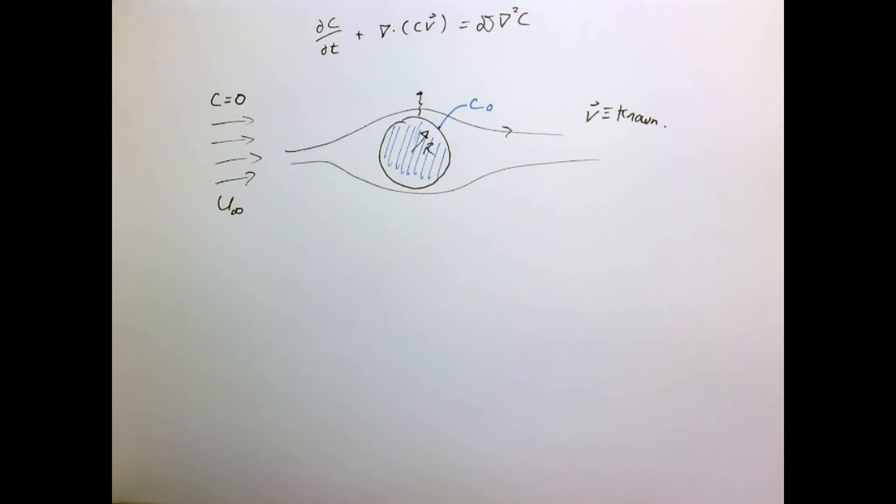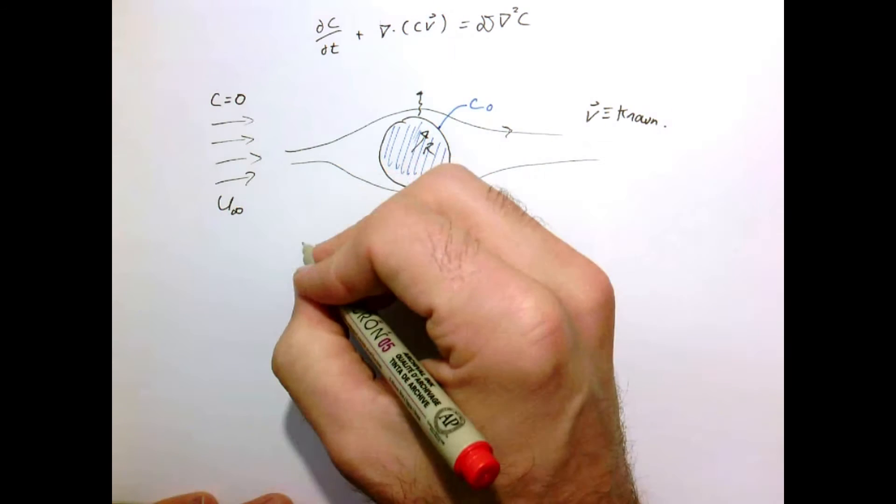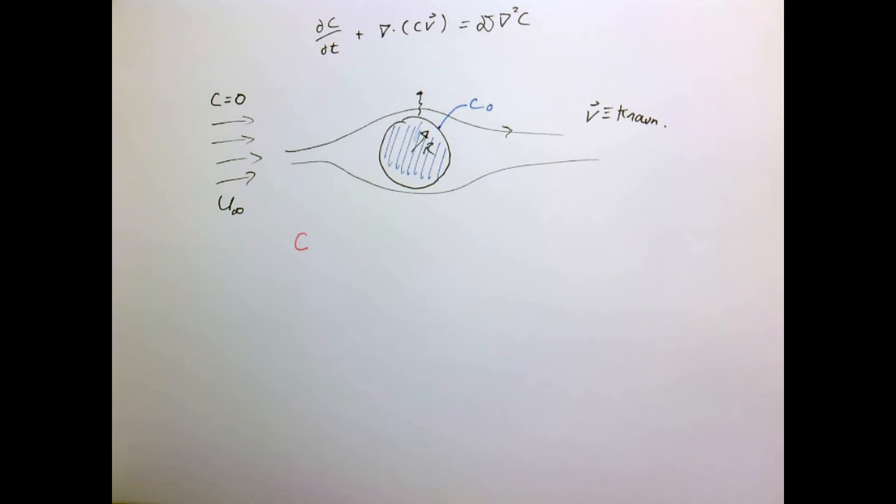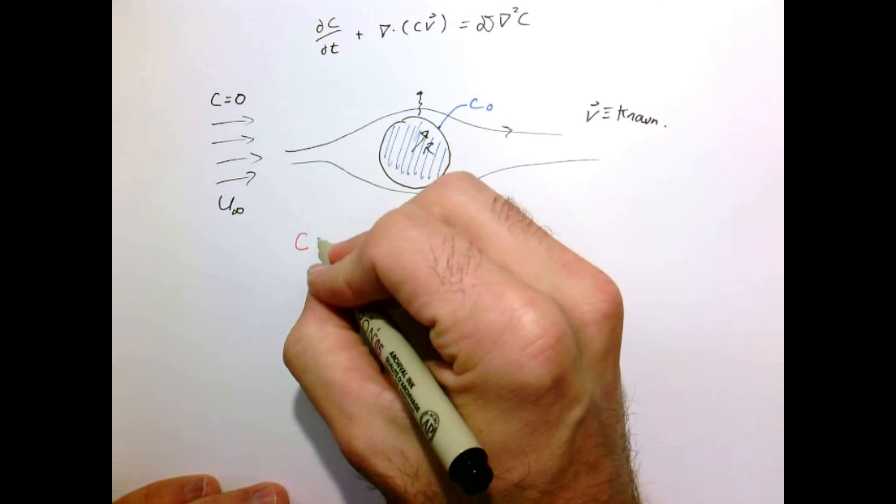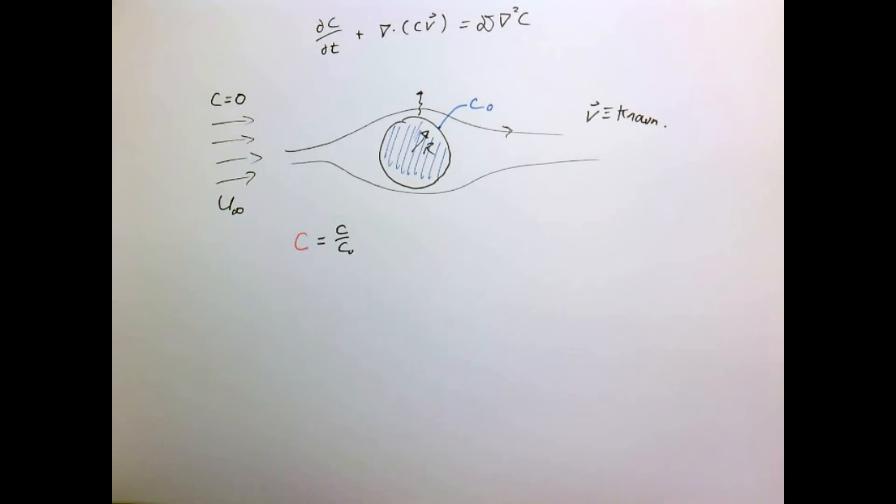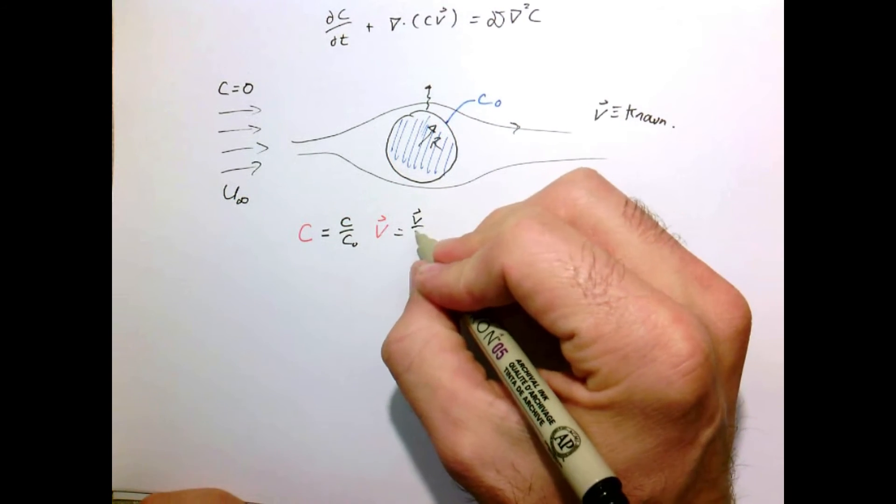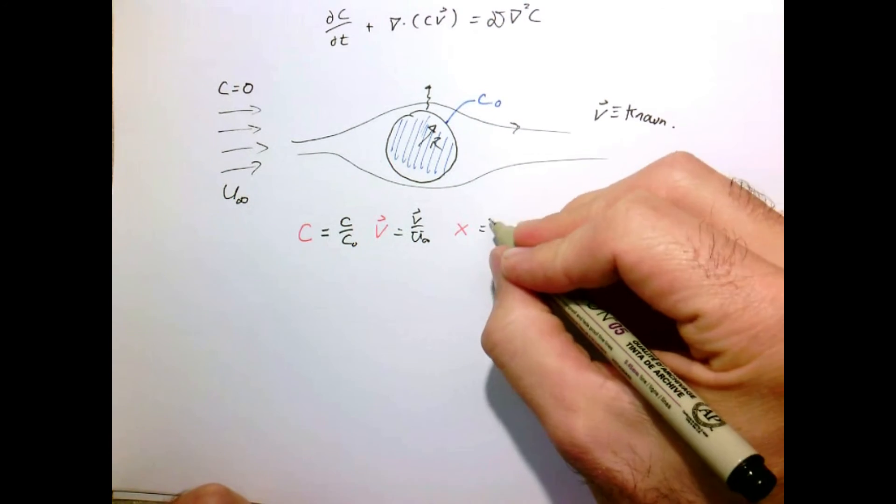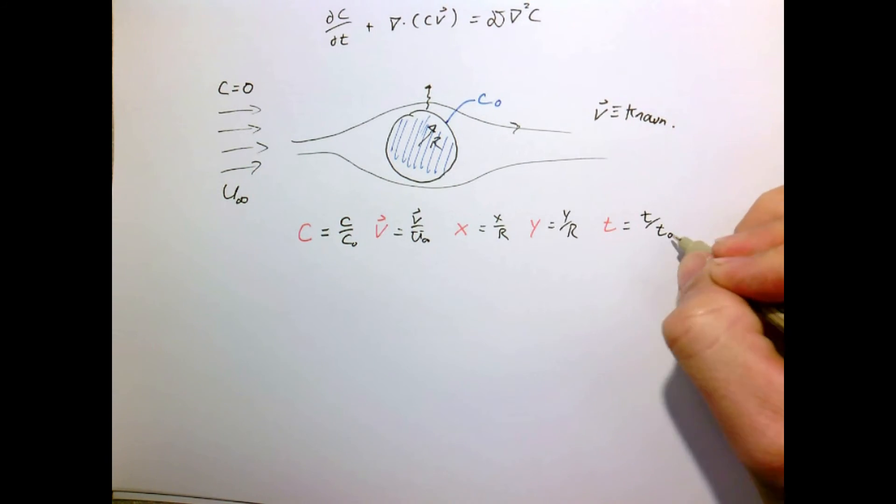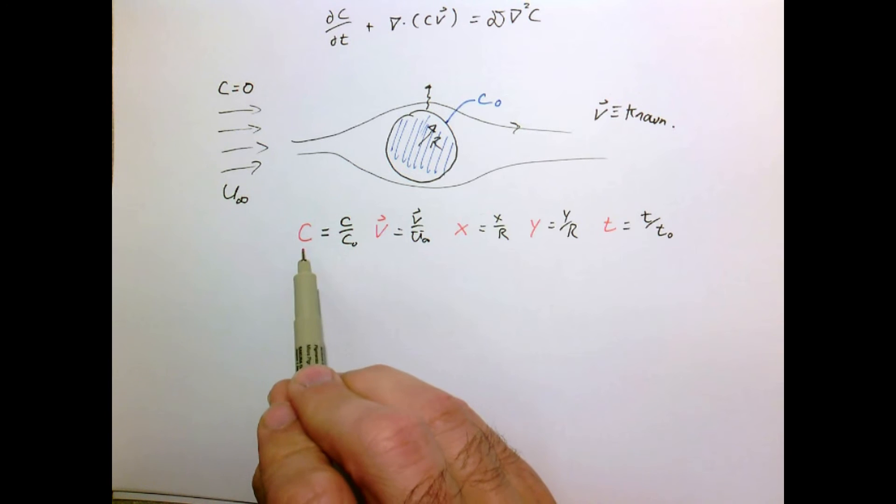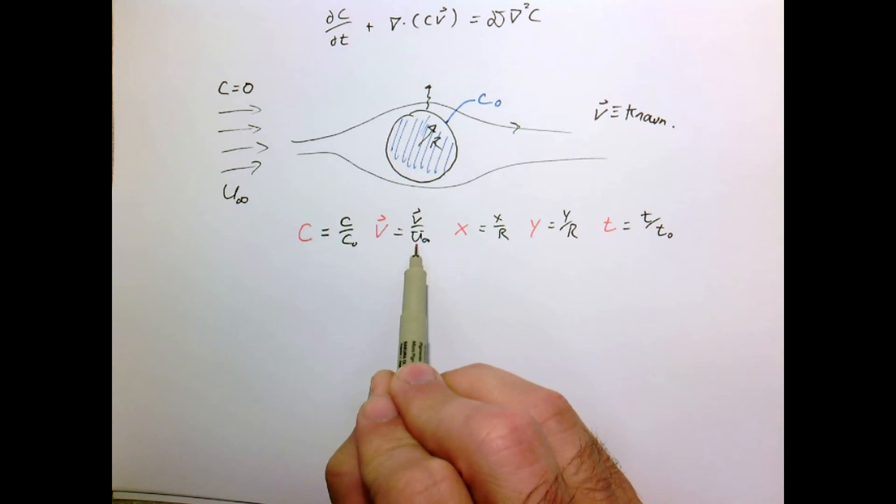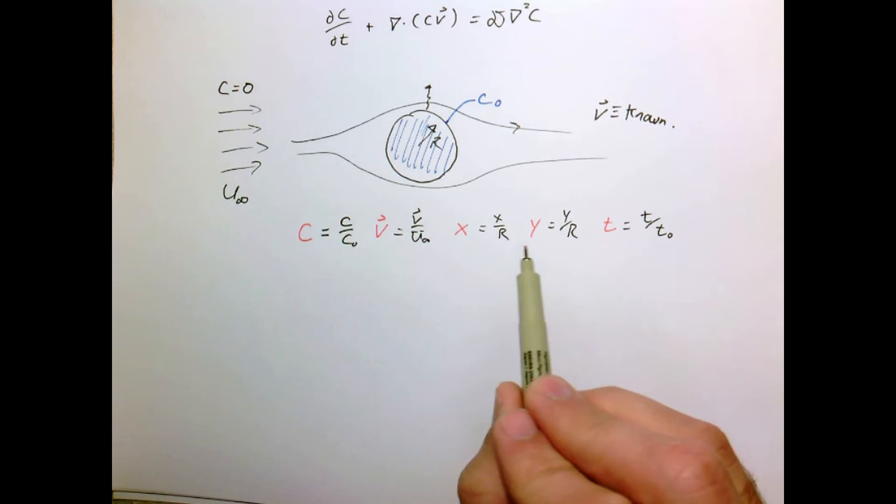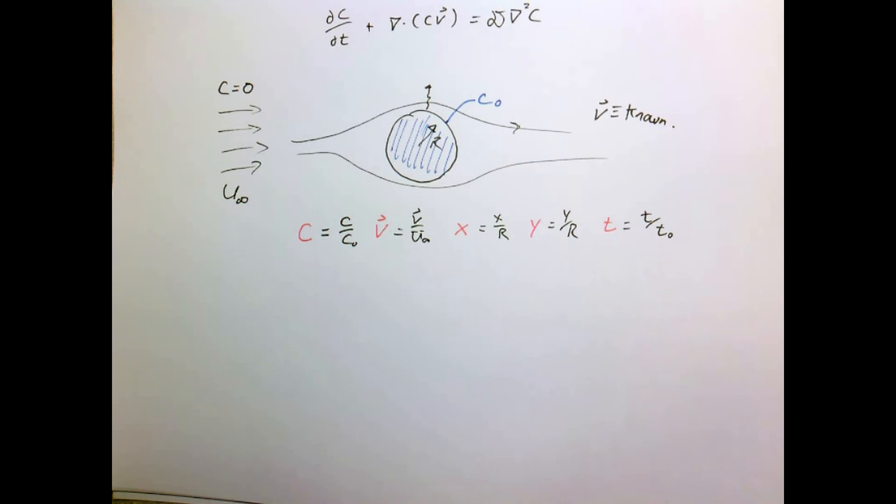We want to know what this concentration field is in our fluid. To figure out what the important parameters are, we're going to make our equation dimensionless. I'm going to use red to denote dimensionless. My dimensionless concentration will be C divided by C naught, my dimensionless velocity vector will be V divided by U infinity, x and y coordinates divided by the radius of the sphere, and time divided by some arbitrary constant t naught.